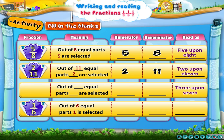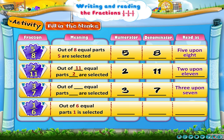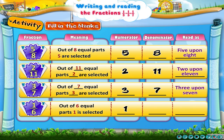This fraction is read as three upon seven. It means out of seven equal parts, three are selected. We write the fraction as three upon seven. The next fraction means out of six equal parts, one is selected. So the numerator is one and the denominator is six. This fraction is read as one upon six.